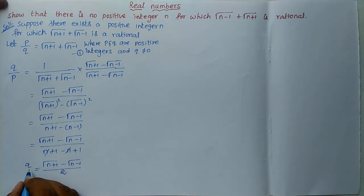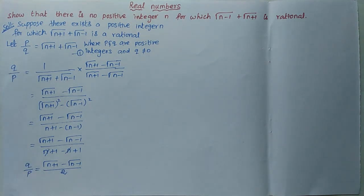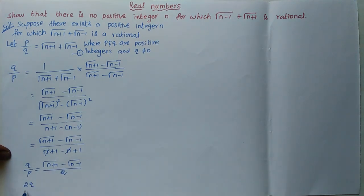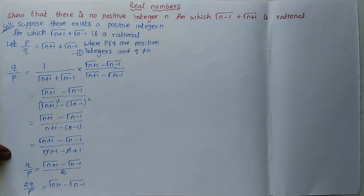We have q/p on the left side. Multiply both sides by 2, so 2q/p = √(n+1) − √(n−1). This is Equation 2.